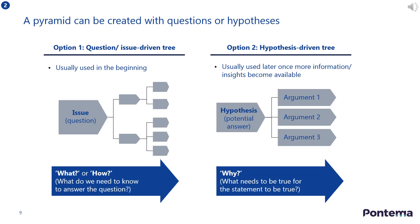In the second step you need to build the pyramid. A pyramid can be created with the key question you identified in step 1, or it can be created with a statement which is an early hypothesis or argument of what needs to be done. It is practical to start with a question-driven tree early in the project when there is less information available, and then evolve to a statement or hypothesis-driven tree further in the project once more insights become available.